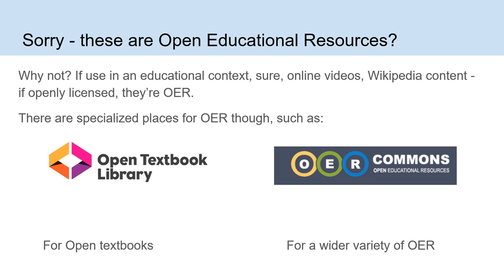So are these open educational resources? Sure — if you're using them in an educational context, why not? Online videos, Wikipedia content — they're openly licensed and often used for educational purposes. But there are also specialized places where people upload and publish open educational resources quite specifically. These include places like the Open Textbook Library, which focuses on open textbooks — a significant type of OER with quite a lot available — and OER Commons, a very well-known repository with a wider variety of formats that are discoverable there.